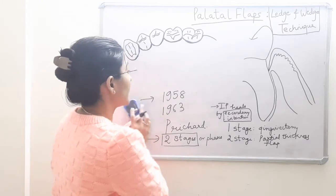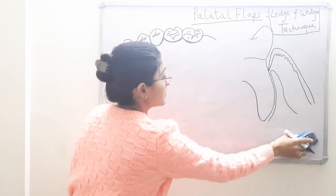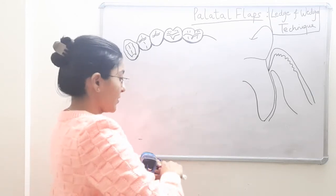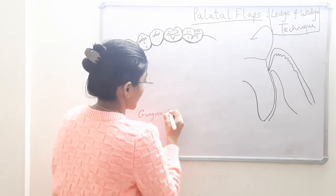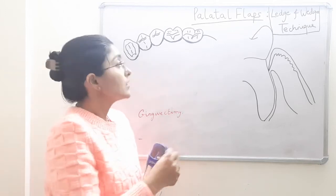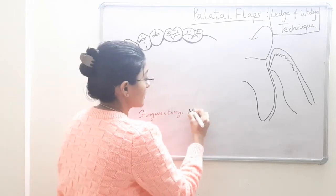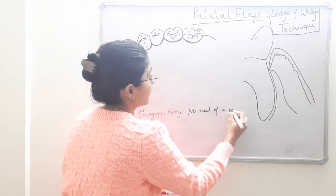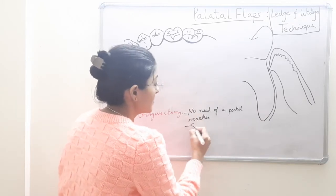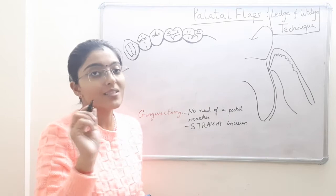Now let's discuss the technique in detail and the surgical procedure. Under the surgical procedure, first we will discuss stage 1 which is gingivectomy. The two major differences between a regular gingivectomy and the gingivectomy portion in this technique are: first, no need to mark the pockets — no need of a pocket marker; a periodontal probe should be sufficient.